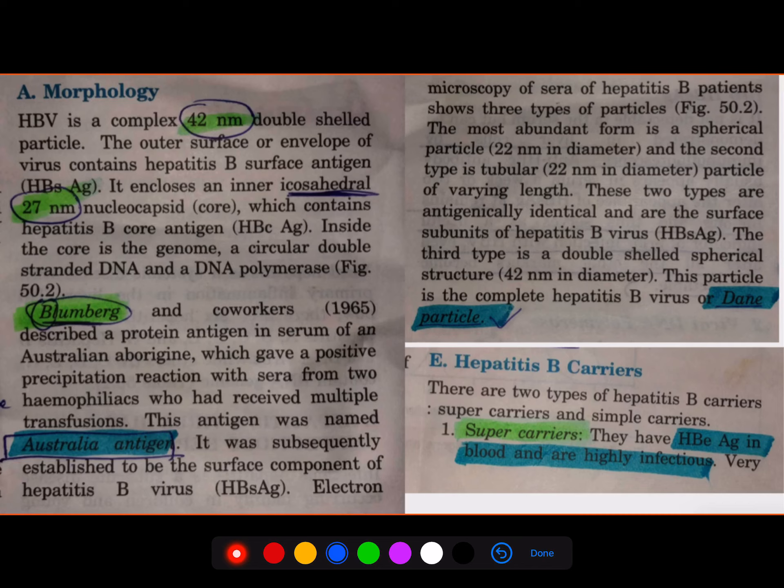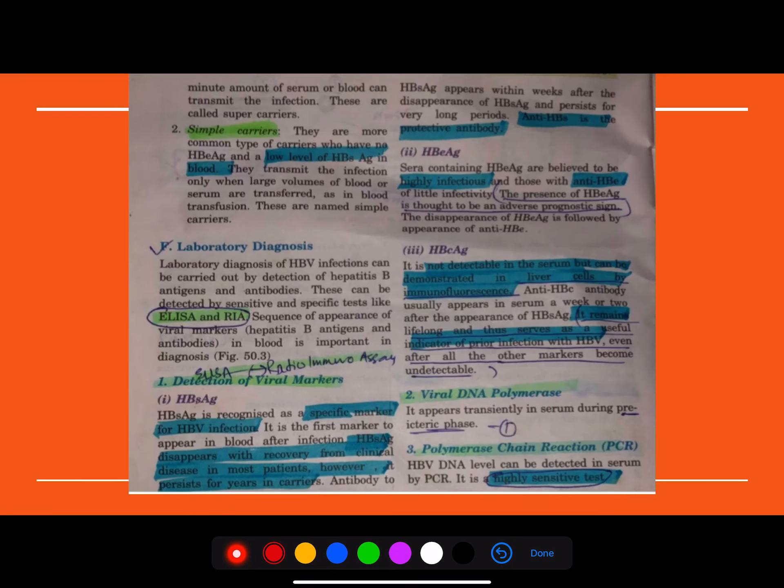I don't want to take much of your time. Just do make a note of the difference between the Australian antigen and the Dane antigen. So what are the sizes? The person who has given it and come into the carriers of hepatitis. Hepatitis carriers are classified into super carriers. So what is the specific thing that you can find in super carriers? Then you can make a note about the simple carriers.